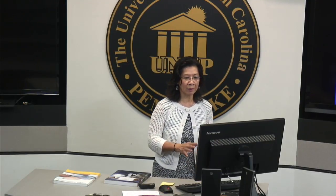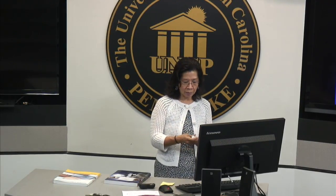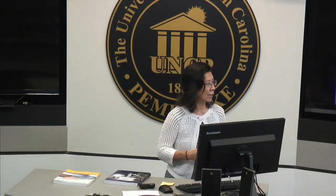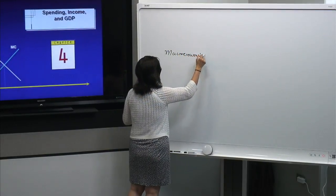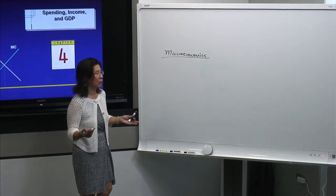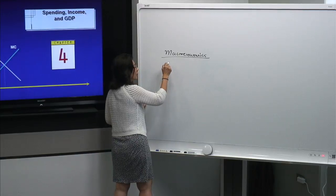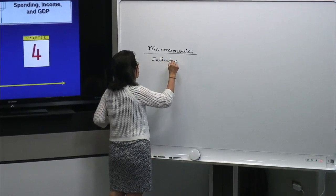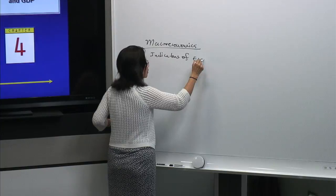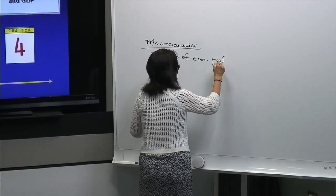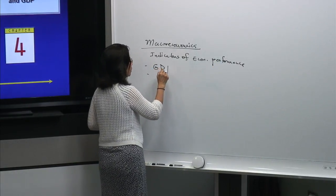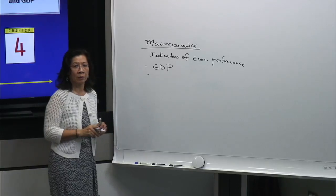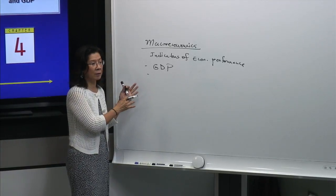Without further delay we're going to get started now with chapter four. In chapter four we're going to deal with a big part of the economy. In macroeconomics we're dealing with the big picture of the economy, and some of the things we do is study the indicators of economic performance. Some of the things we study would be GDP, which stands for Gross Domestic Product, and that is what we will cover in chapter four.